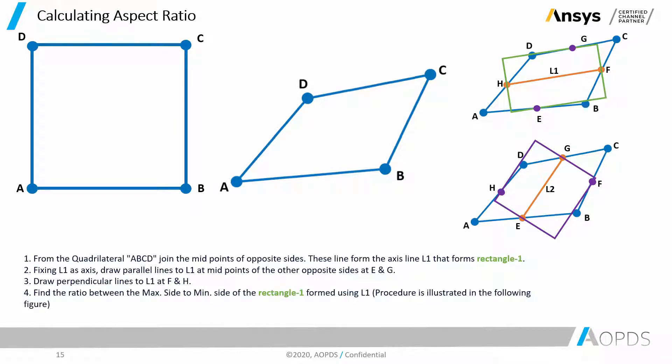Step number one. From the quadrilateral A, B, C, and D, join the midpoints of opposite sides. These lines form the axis line L1 that forms rectangle one. And as you can see, rectangle one is represented by green color and rectangle two is represented by purple color.